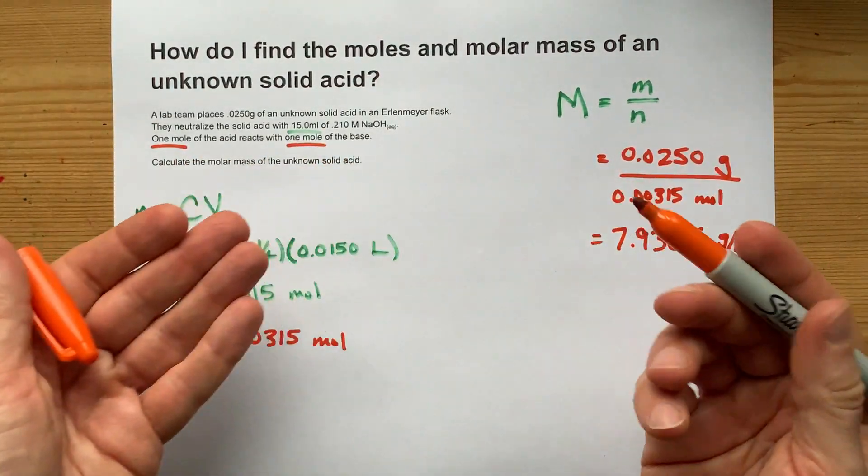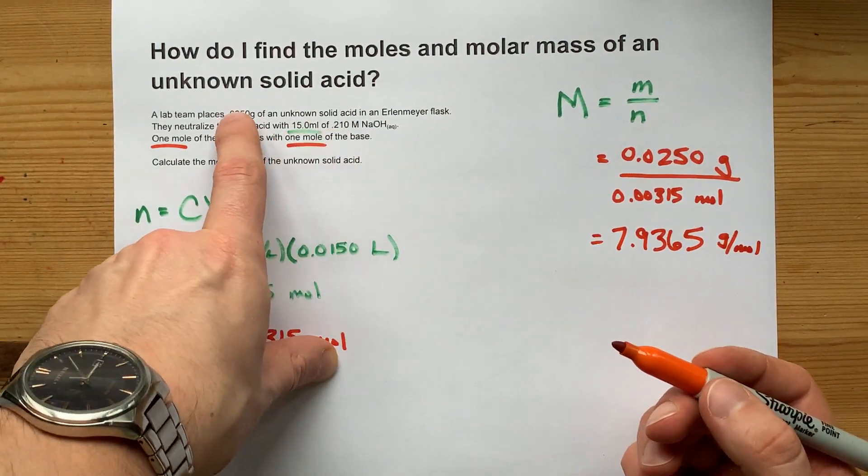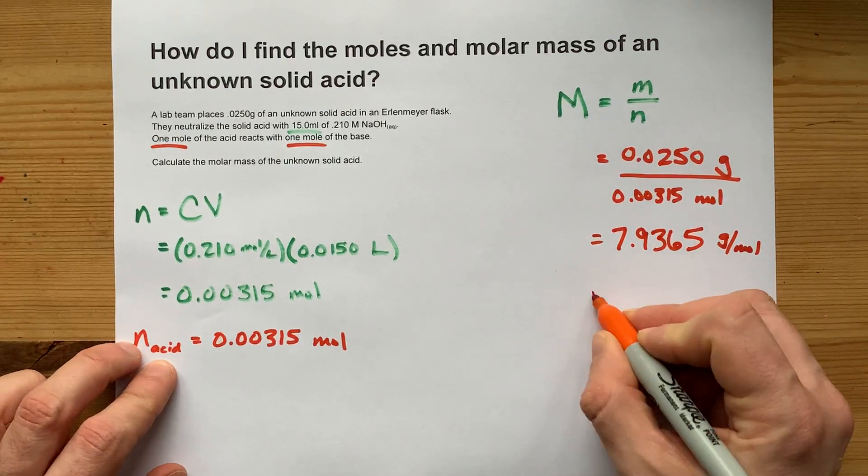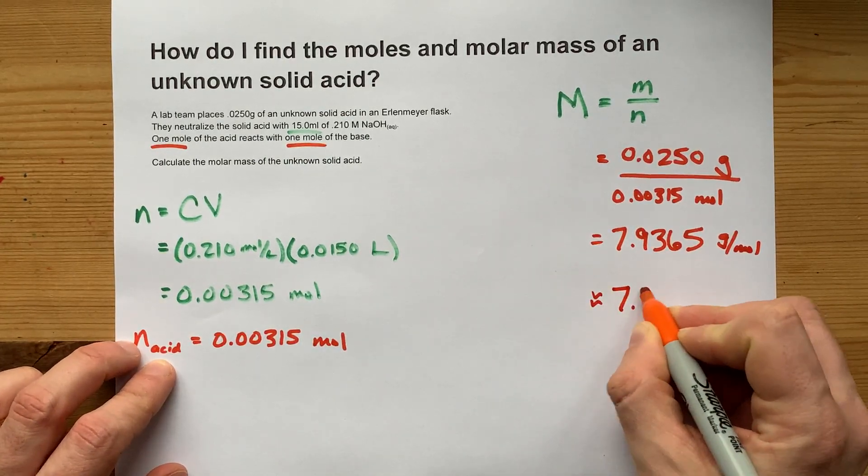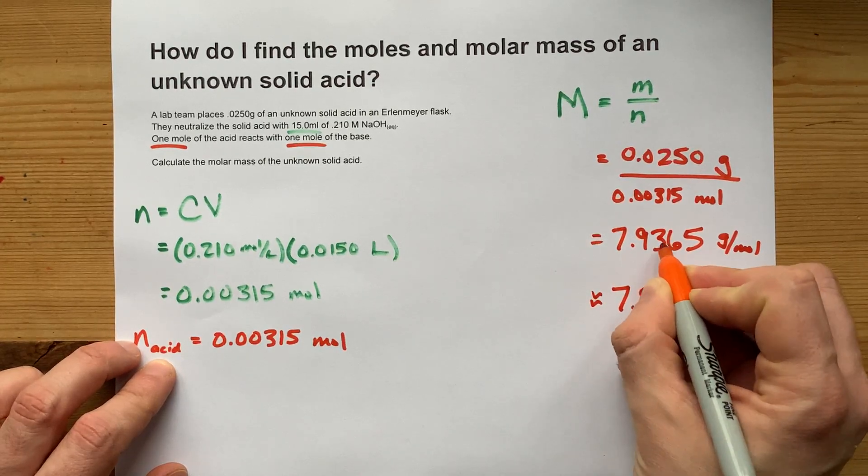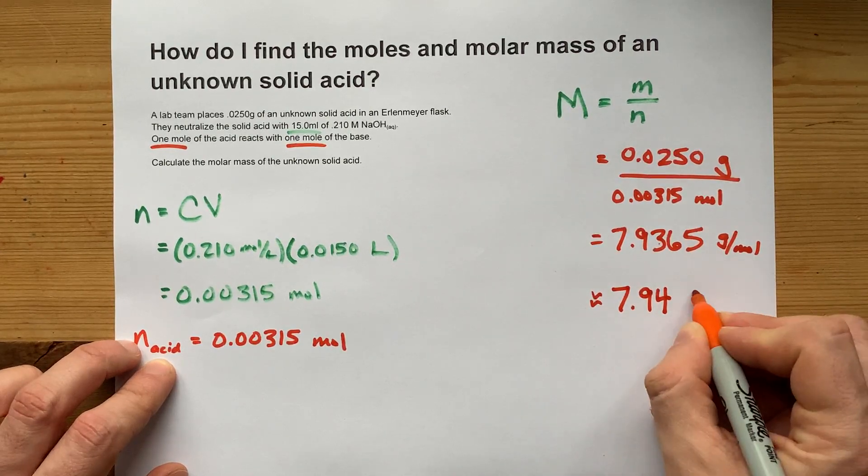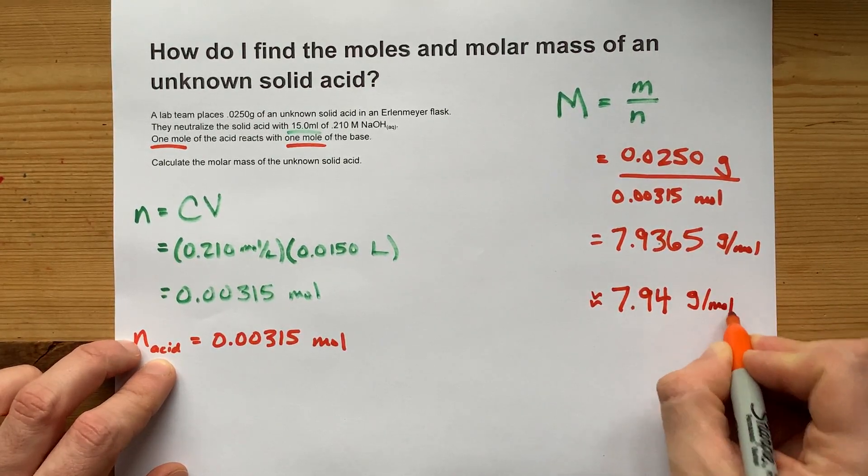And most teachers are going to ask you to use significant figures. This one's three sig figs, this one's three sig figs, that one's three sig figs. So that means I'm going to round this to 7.94, three sig figs, and that's followed by a number that's more than five. So there you go, 7.94 grams per mole.